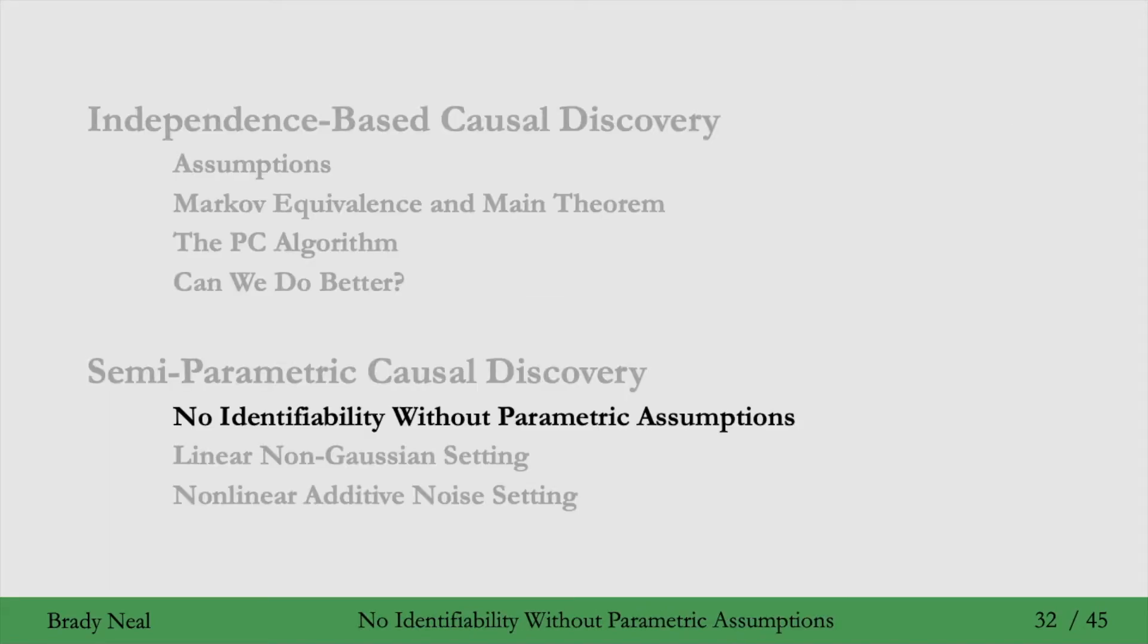In the first part of this section on semi-parametric causal discovery, we're going to point out that you can't identify the true causal graph without making any parametric assumptions. So by identifiability here, in this whole lecture, we're referring to identifying the graph, not some causal estimate.